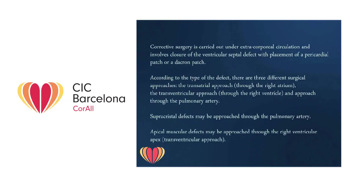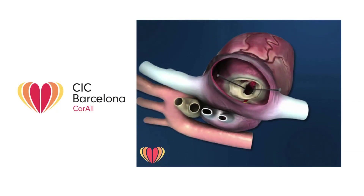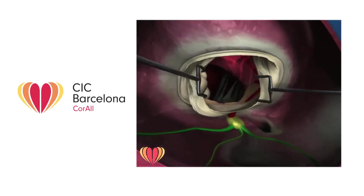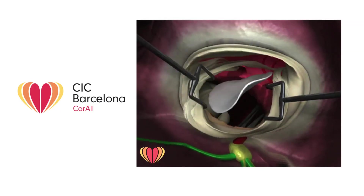Corrective surgery is carried out under extracorporeal circulation and involves closure of the ventricular septal defect with placement of a pericardial patch or a Dacron patch. According to the type of defect there are three different surgical approaches: the transatrial approach through the right atrium, the transventricular approach through the right ventricle, and approach through the pulmonary artery. Supracrystal defects may be approached through the pulmonary artery. Apical muscular defects may be approached through the right ventricular apex. The animation shows corrective surgery for ventricular septal defect carried out using the transatrial approach. A right atriotomy is performed and surgeons evaluate the defect through the tricuspid valve. The animation shows the ventricular septal defect and the conducting tissues. The defect is then repaired with placement by suture of a pericardial or other patch, followed by closure of the right atrium.